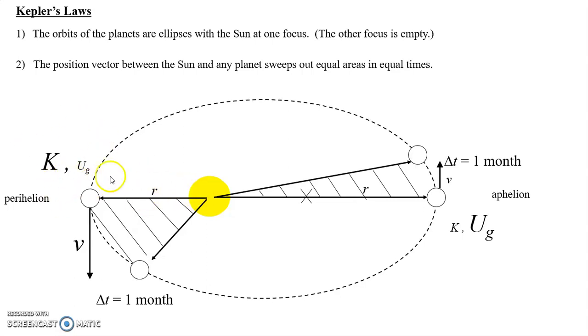So here, for example, if it's the Earth at the distance of closest approach to the Sun, here's the position vector. Then one month later, there's the position vector. And then all the way to the other end of its orbit at the six-month mark, there's a position vector, and there's the position vector one month after that.